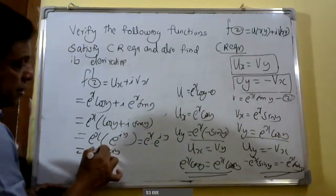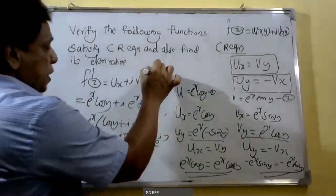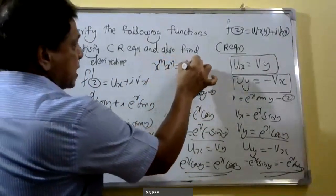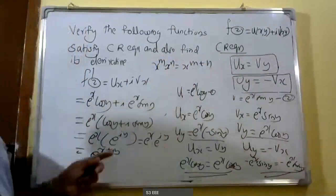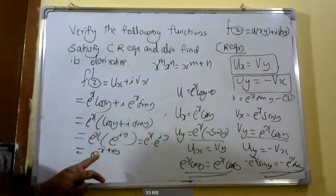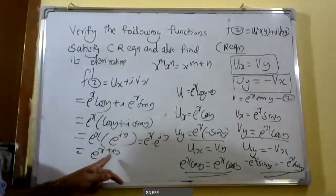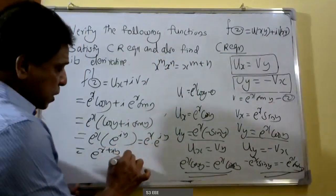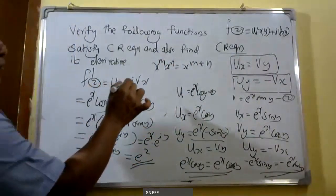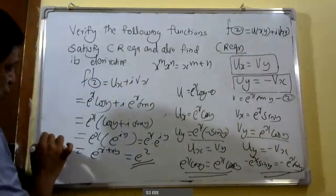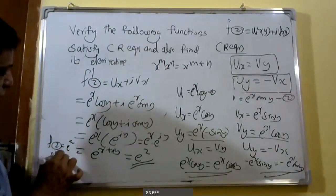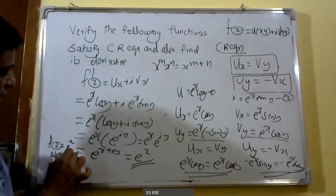We take e raised to x outside: e raised to x into cos y plus i sine y. We know that cos y plus i sine y equals e raised to i y. This can be taken as e raised to x into e raised to i y, which equals e raised to x plus i y, by using the result x raised to m into x raised to n equals x raised to m plus n. This equals e raised to z.